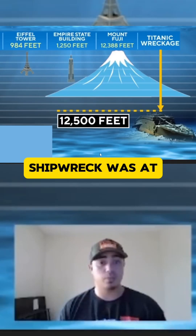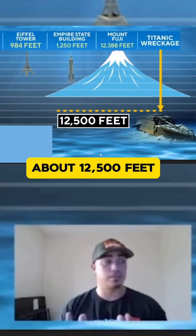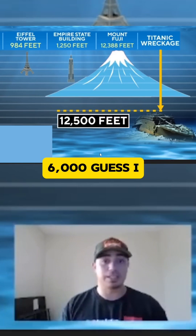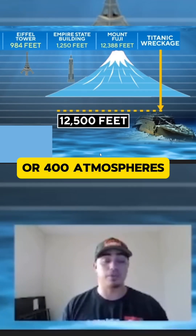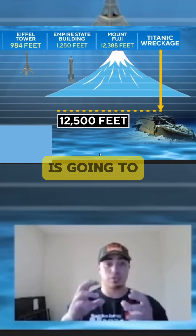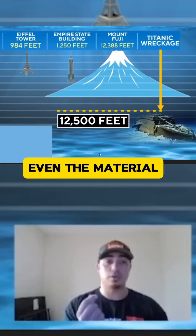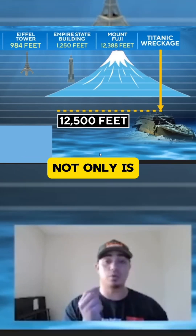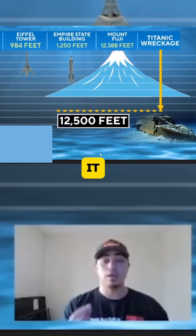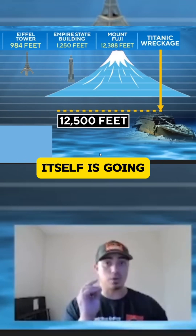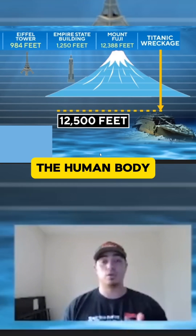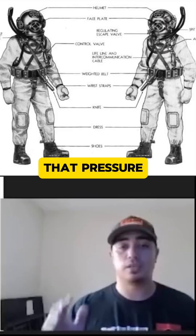The Titanic shipwreck was at about 12,500 feet, which is about 6,000 psi or 400 atmospheres. So you can imagine that balloon is going to get crushed. Not only is all the air going to get squeezed out of it, but the material itself is going to be compressed. At that depth, the human body can't fight off that pressure.